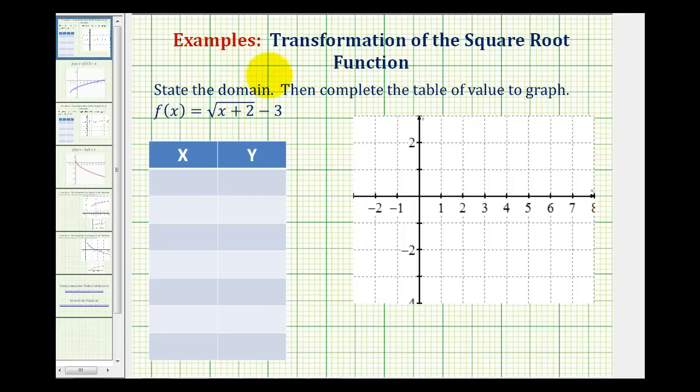The domain is controlled by the expression underneath the square root, or this x plus 2, because if we take the square root of a negative number it would not be real. So the domain would be all the values of x where x plus 2 is greater than or equal to 0. So if we solve this for x, we would have x is greater than or equal to negative 2, which would be our domain.